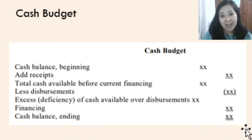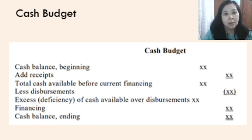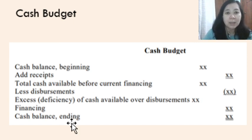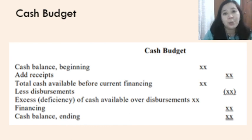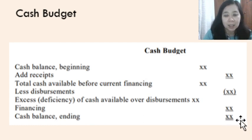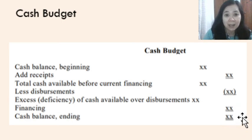Some entities require a minimum ending cash balance — for example, maintaining at least 10,000 in ending cash balance every month. If this minimum is not met, additional funds are needed. That covers the cash budget.